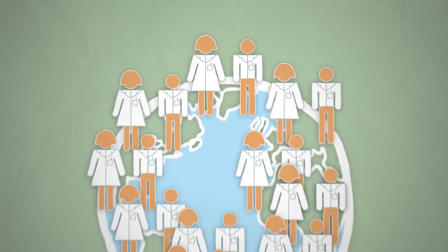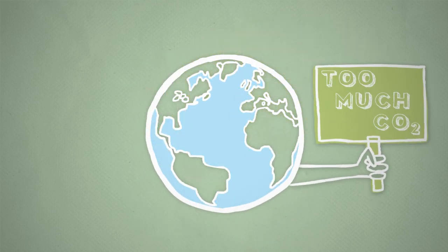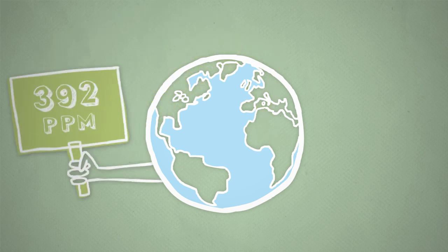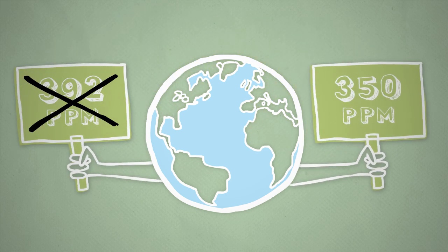Scientists and the governments of many nations now agree that we're releasing too much carbon dioxide. And to prevent the worst effects of rapid climate change, we're going to have to reduce that 392 parts per million number to about 350.